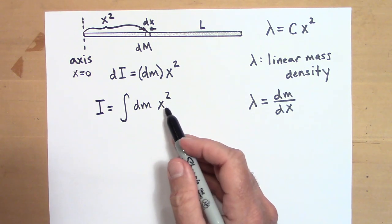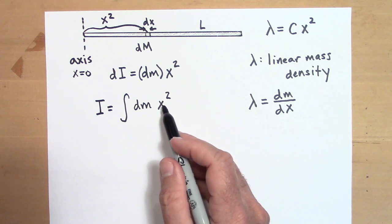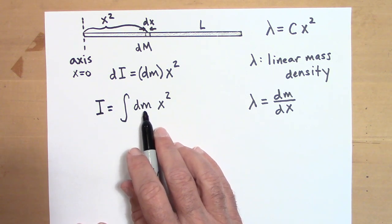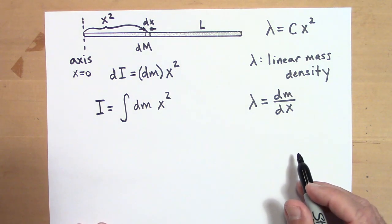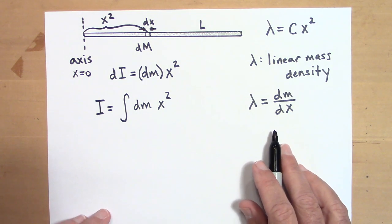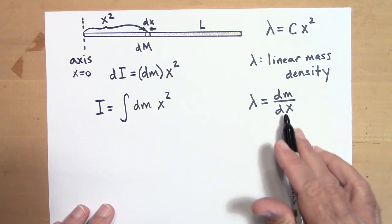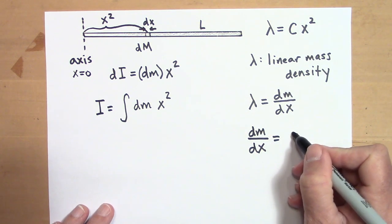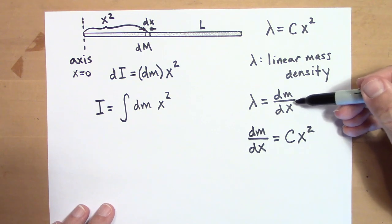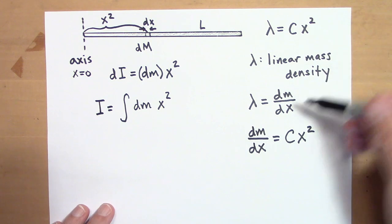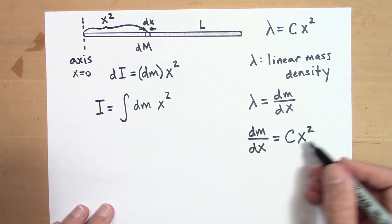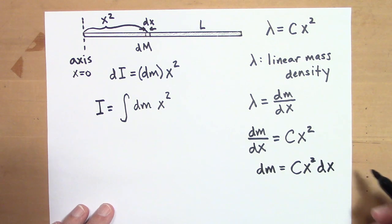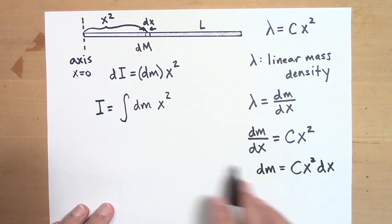Our variable is x, but dm is not yet in terms of x, so I need to express dm in terms of dx. Since lambda equals dm over dx, and we defined lambda as cx squared, we have dm over dx equals cx squared. Bringing dx to the other side gives dm equals cx squared dx. I've now successfully expressed dm in terms of dx.